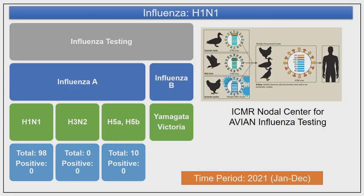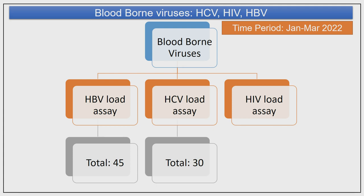For influenza testing, our kit can detect bird flu, swine flu, and H5N8 — the recent outbreak in Rajasthan — as well as endemic strains Yamagata and Victoria. We tested 98 samples referred from across Rajasthan, with none coming positive. We also tested 10 veterinarians who sent samples for H5N8. For blood-borne diseases, we have a panel for HBV, HCV, and HIV viral load — receiving about 100 samples per day in AIIMS alone. We have started viral load testing at the RVRDL. Clinicians are requested to send at least 10 ml of blood, as we need at least 2 ml of plasma for viral load testing.